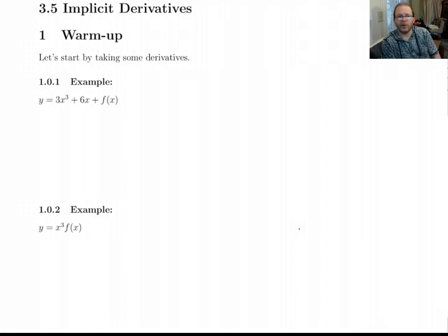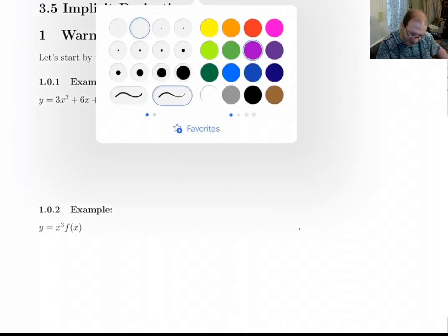Hey guys, today we're going back to chapter 3 and look at section 3.5, which is on implicit derivatives. This is a long section, so it's going to get split into several videos, and there are going to be quite a few examples. I want to start with just some warm-ups that will kind of lead into this topic.